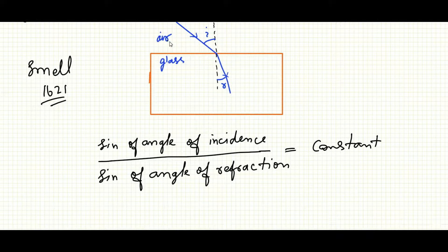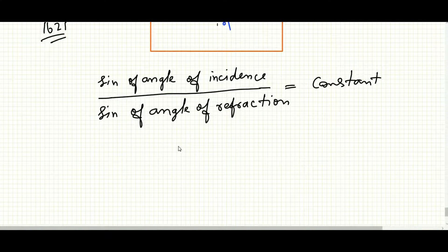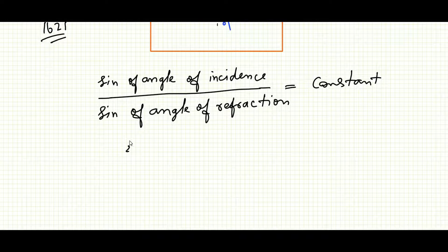For example, if this is air and this is glass and if the angle of incidence, suppose I am telling here is 60 degrees, if I equals 60 degrees and R equals, for example, 40 degrees.